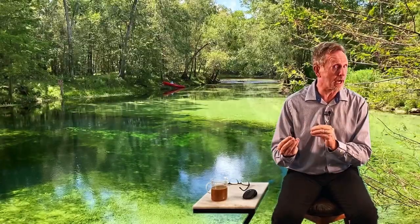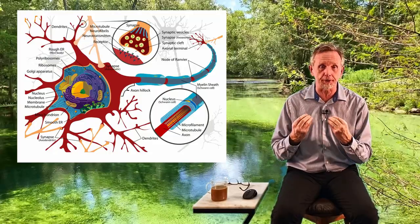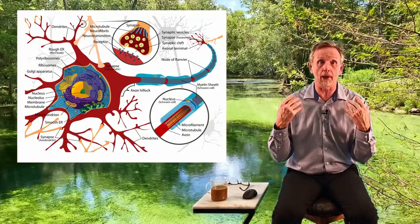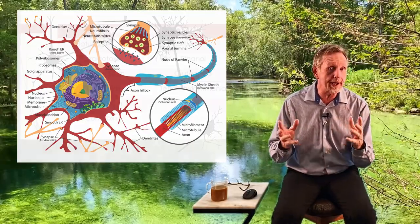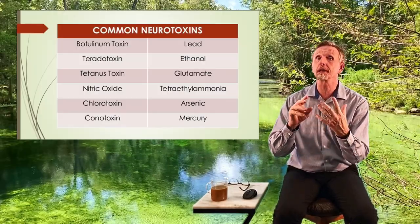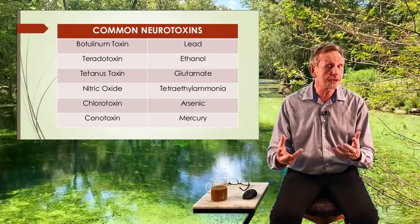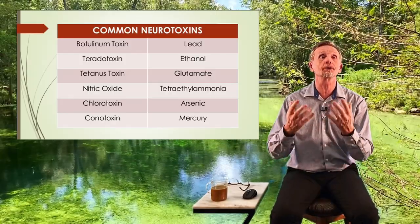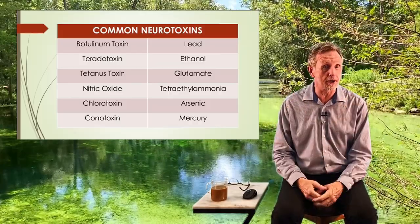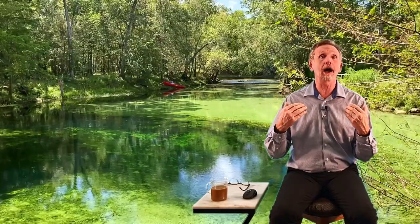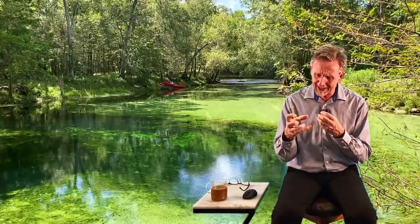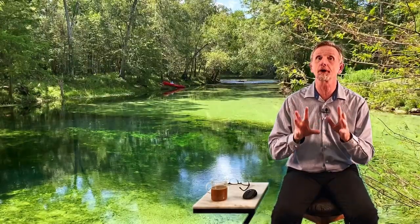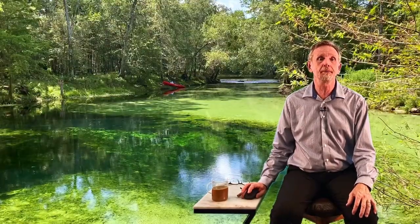We also have neurotoxins — things that specifically attack the nervous system, affecting our ability to think, reaction times, and coordination. Examples include PCBs, arsenic, lead, certain pesticides, and methylmercury. Mercury in general is incredibly dangerous to the neural system because it affects brain function — the phrase 'mad as a hatter' relates to this. Anything affecting our nervous system can impair cognitive abilities, concentration, and even motor function.